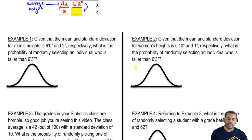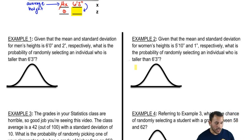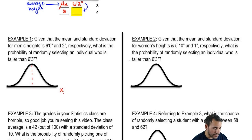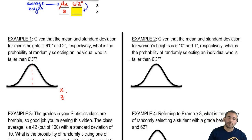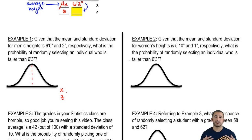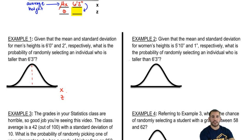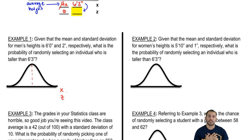Given that the mean and standard deviation for men's heights is 6'0" and 2" respectively, what is the probability of randomly selecting an individual who is taller than 6'3"? The mean is 6'0" and the standard deviation is 2". What you have to do from the beginning is convert everything to one scale — either all in inches or all in feet. I'll use inches to avoid decimals. So 2 inches stays as the standard deviation.